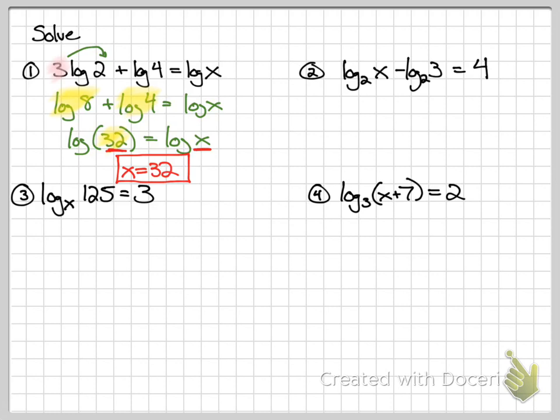Same idea on number 2. We want to condense the two logarithms together. Minus this time. Remember, minus is divide. The top number over the bottom. Or the positive number on top and the negative number on the bottom. Now I've got a log on one side and a number on the other. So I can't solve this. It's not as easy to solve in log form. So I'm going to rewrite it in exponential form. 2 to the 4th has to equal x over 3. 2 to the 4th is 16. And to solve for x, I'll just multiply both sides by 3. So x ends up equaling 48.